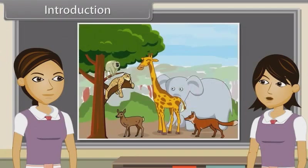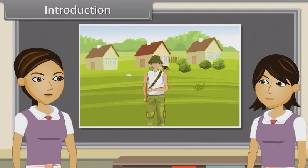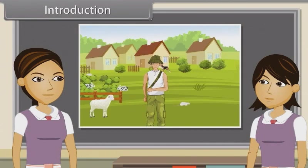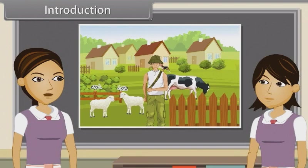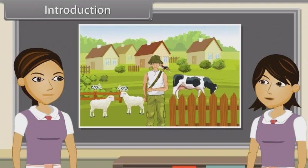We know that plants and animals were present on this planet before the human race evolved. As man started using plants and animals for its basic needs, he started giving names to them in their own language. A common name is a name in general use within a community, often contrasted with a scientific name. Organisms are named using Latin such that no two have the same name. Taxonomy is the branch of biology concerned with identifying, naming and classifying organisms.